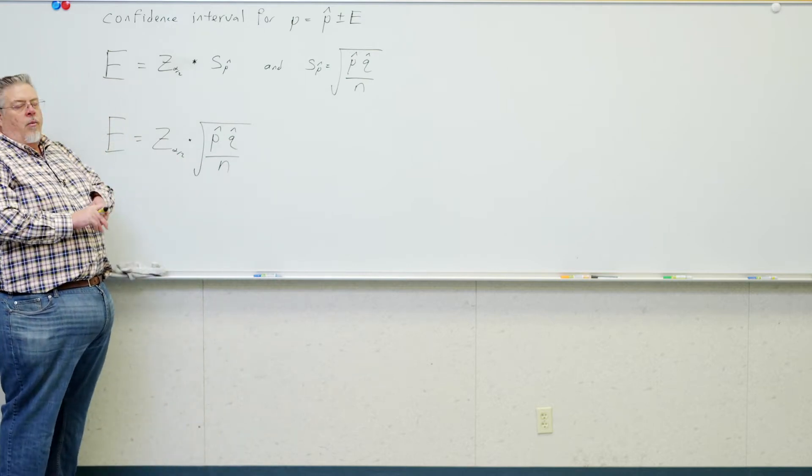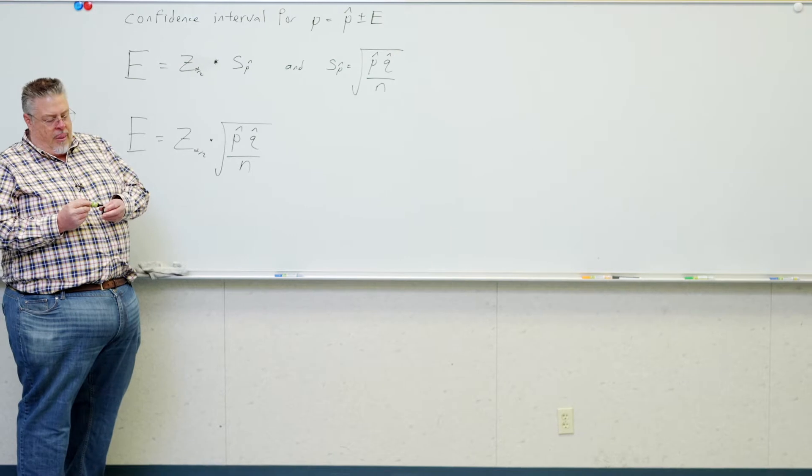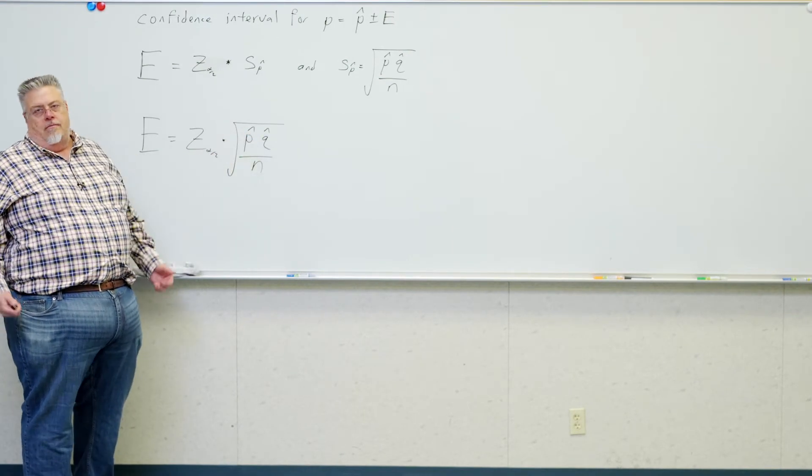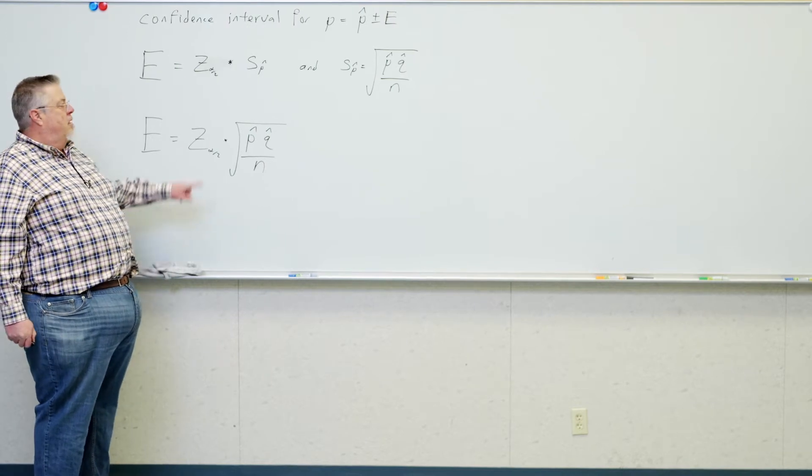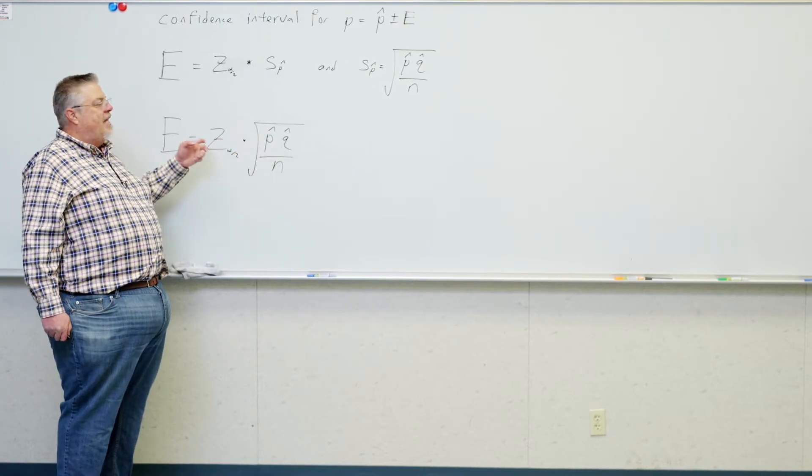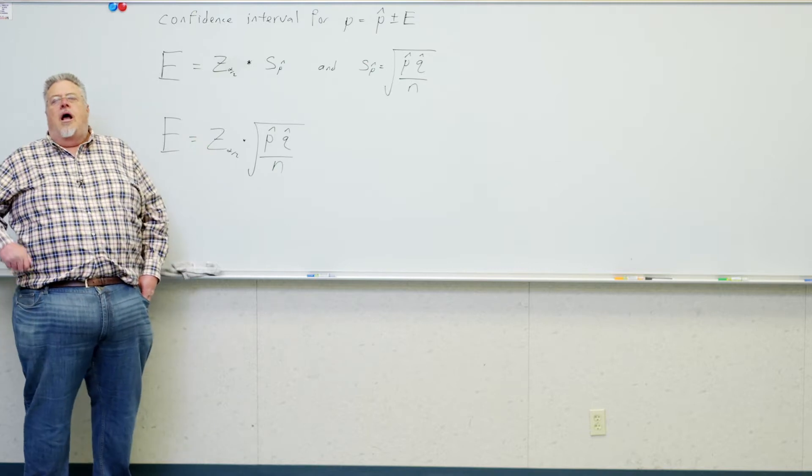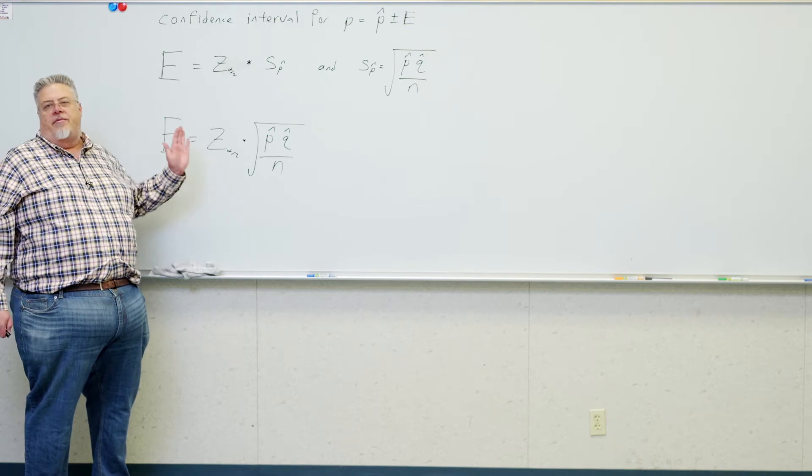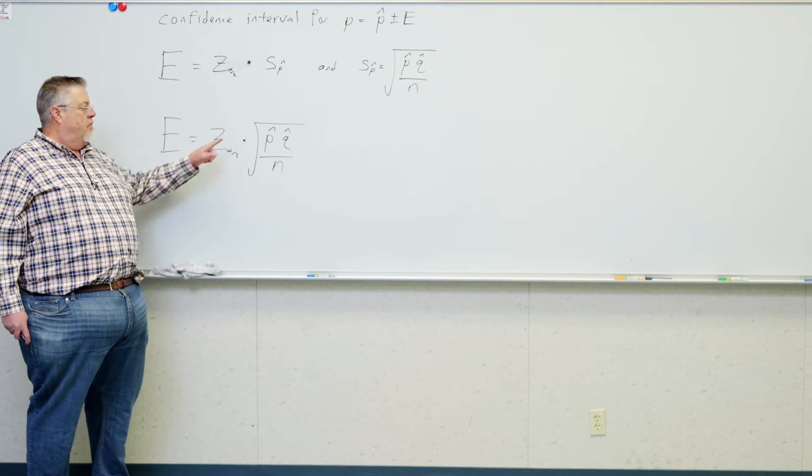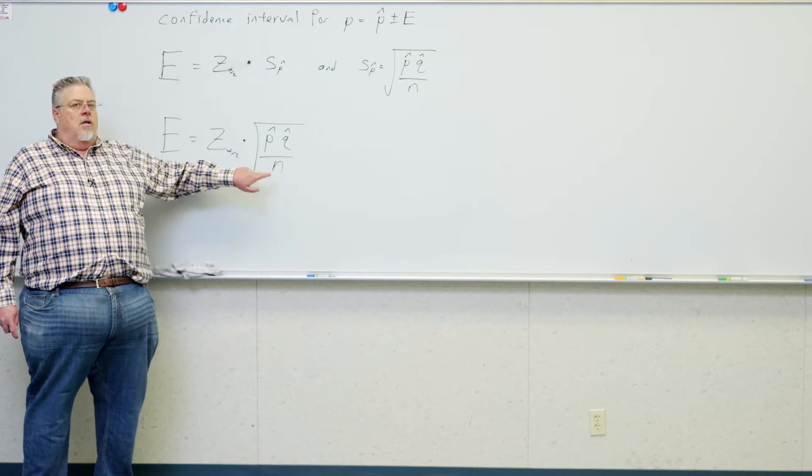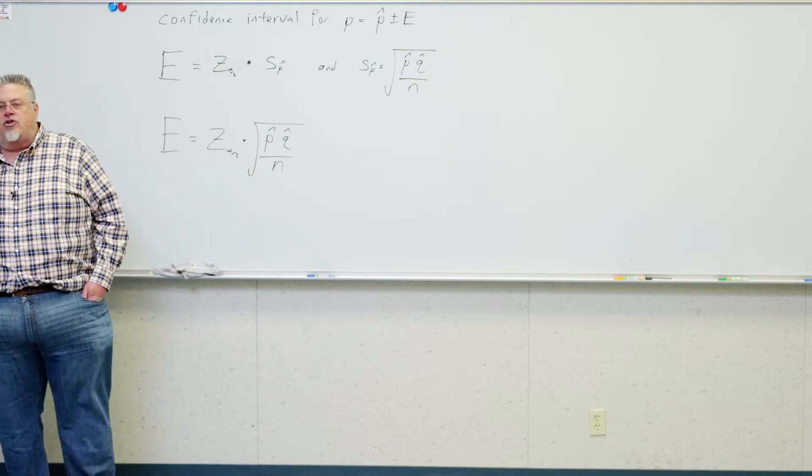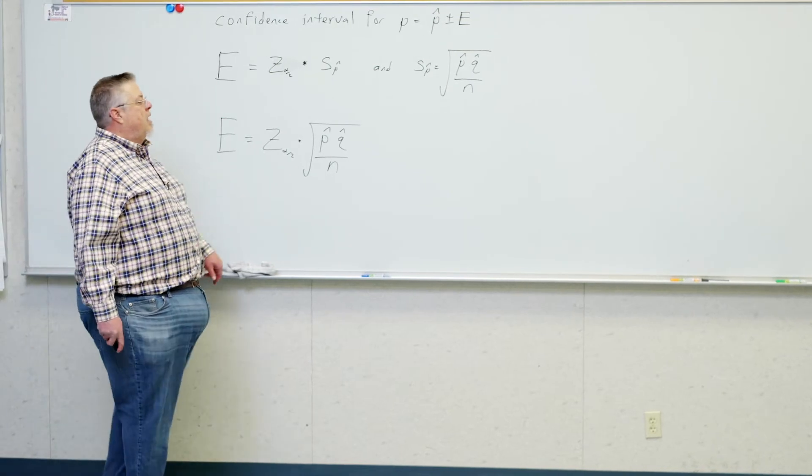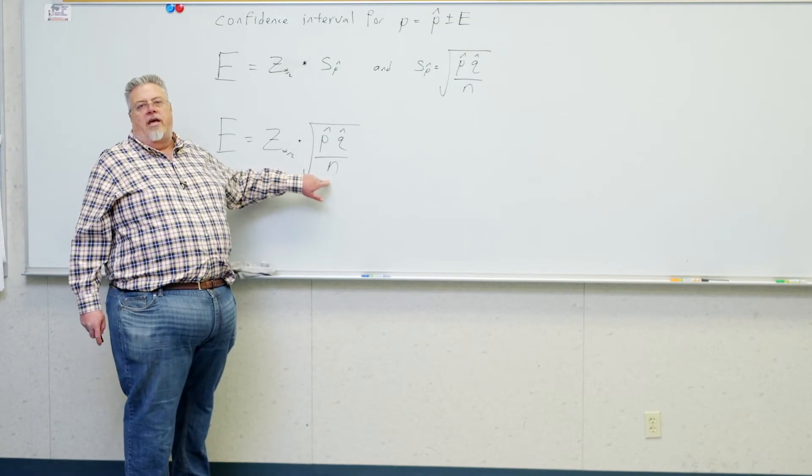What I want to show you here is, you know, we don't have a lot of control over P-hat and Q-hat unless we're doing something shady. These are going to be what they're going to be. Z depends on how much confidence we want. 90%, 95%, 99%. We've got often, we have control over N. Remember what N stands for. N stands for how much data we have taken.